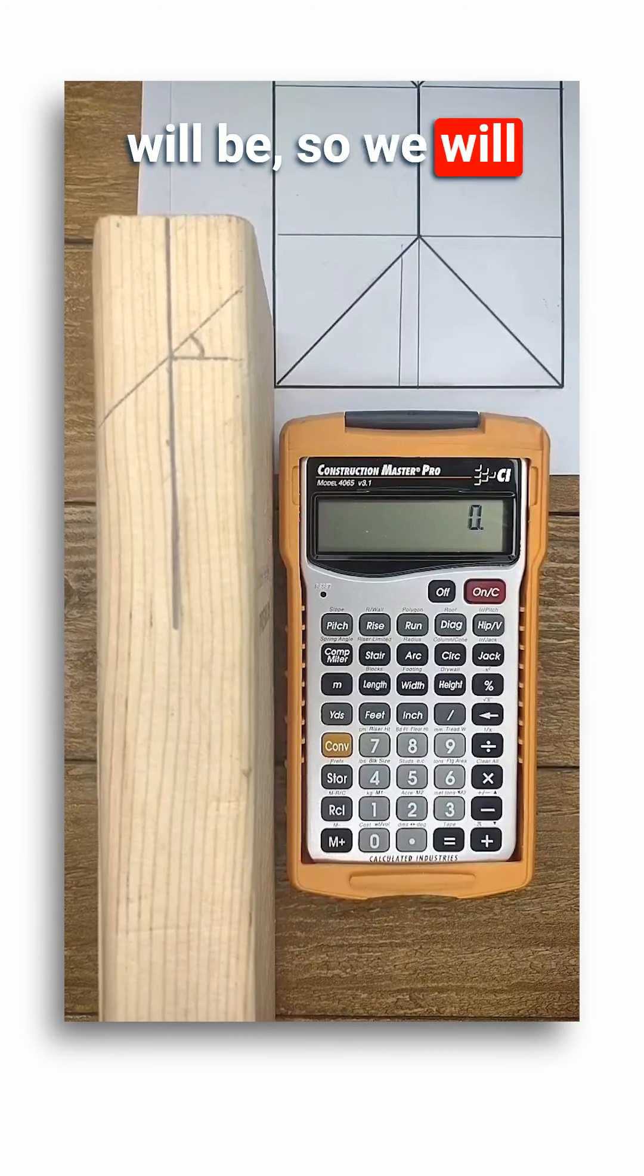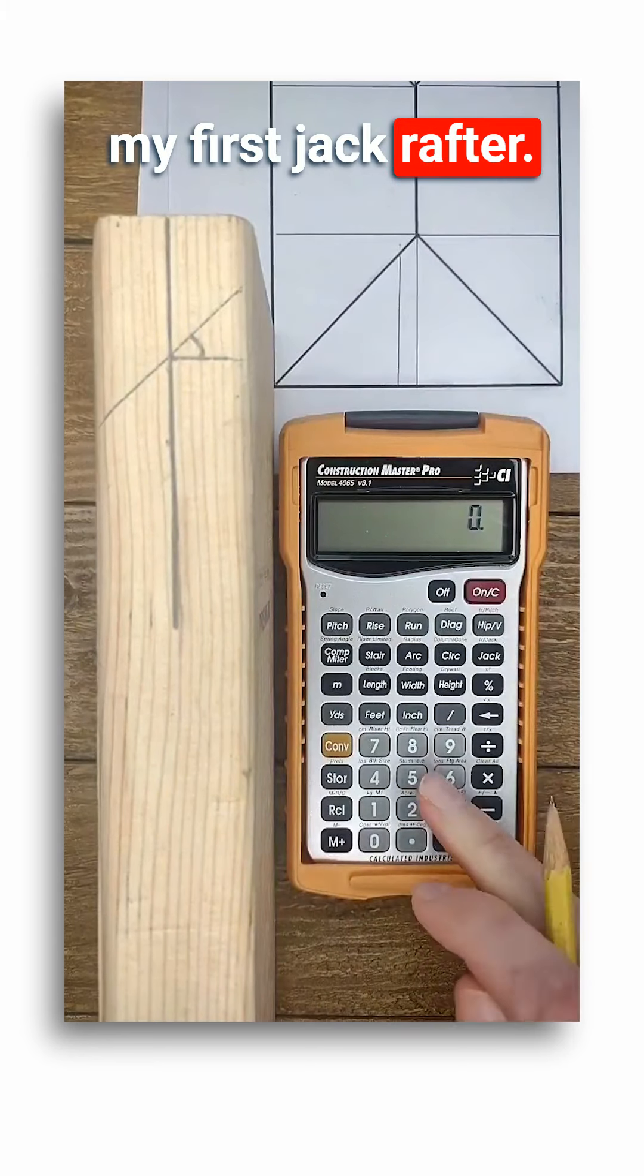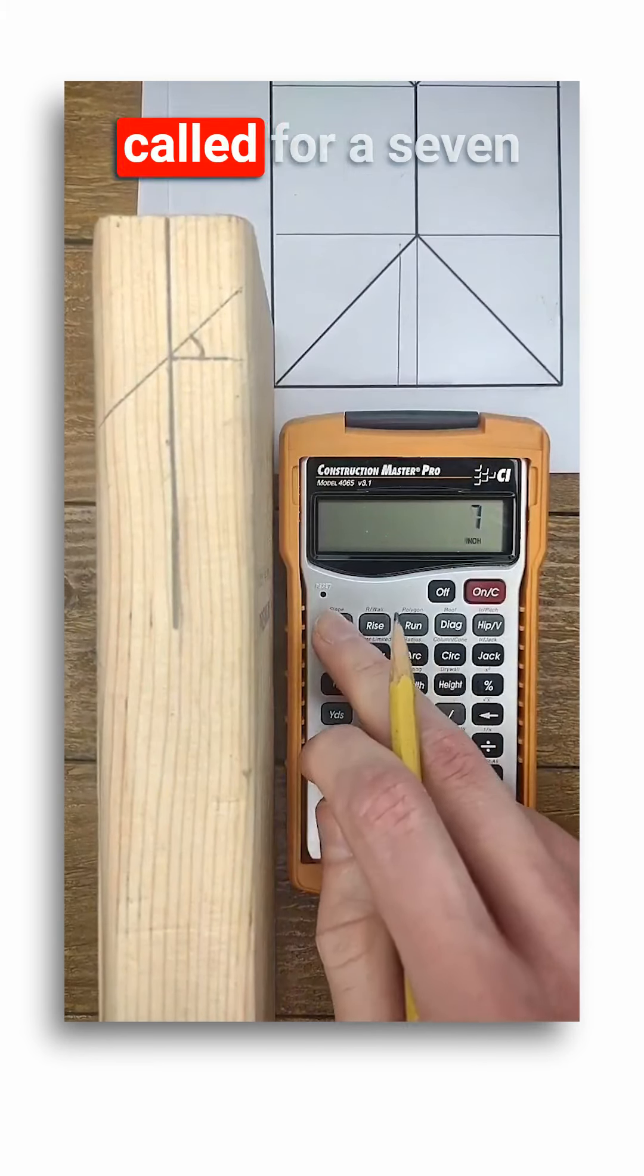Let's start with a simplified plan view drawing of a hip roof. Now the calculator doesn't know how thick the framing lumber will be, so we'll visualize everything as lines first.